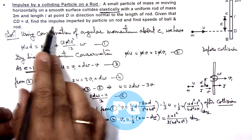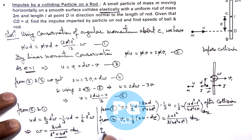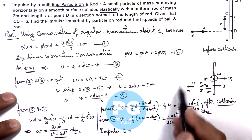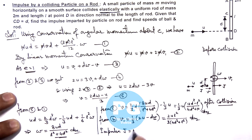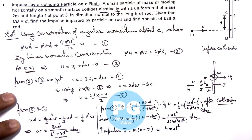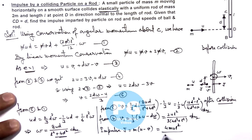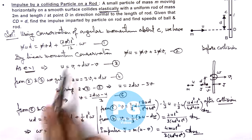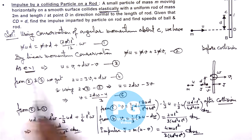Finally, to calculate the impulse imparted by the rod, we use impulse j equals the change in momentum of the ball: j = m·(u − v). Substituting the value of v, the final result is j = 4mul²/[3·(4d² + l²)]. In this problem we mainly used linear and angular momentum conservation along with the coefficient of restitution.